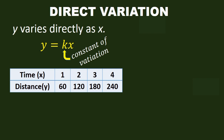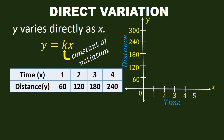This table can be shown in the graph. In direct variation, the graph is a straight line beginning from the origin.